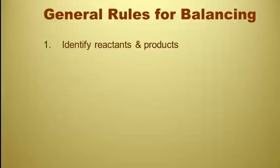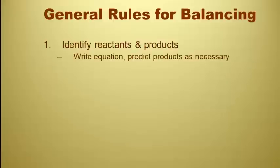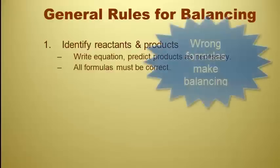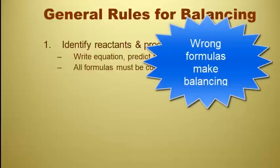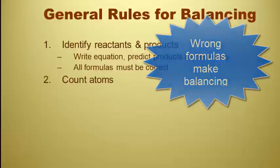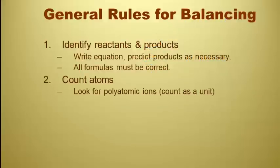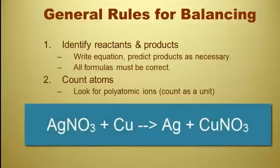Some general rules for balancing. The first rule for balancing is make sure you've identified your products and your reactants. Make sure those equations are written properly and the formulas are correct. The second is to make sure that you count the atoms. Look for polyatomic ions on both sides. If I have nitrate as a reactant and nitrate as a product, I don't need to count nitrogen and oxygen separately. I can count nitrate as a whole unit.